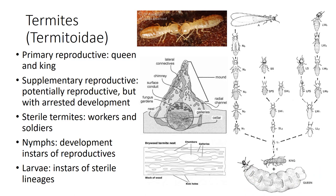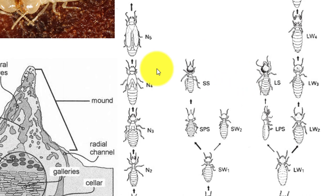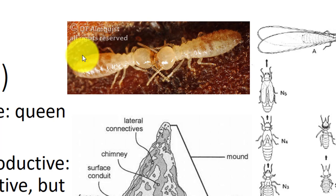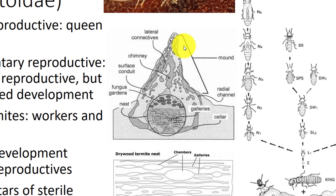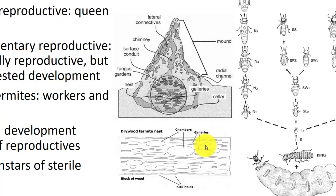All colonies have a pair of primary reproductives—a queen and king—that are long-lived and mate repeatedly. Supplementary reproductives can potentially replace them. Soldiers have distinct heavily sclerotized heads with large mandibles, or with a strongly produced snout through which sticky defensive secretions are ejected. Workers are unspecialized and light-colored, giving rise to the name white ants. As with ants, termites produce pheromones through anal excretions and transfer them through trophallaxis. Subterranean termites nest in the ground and create mud tubes, while drywood termites nest in wood.